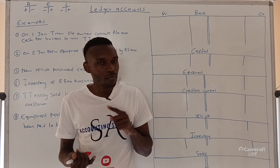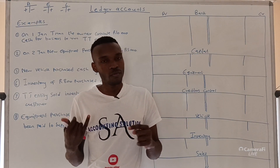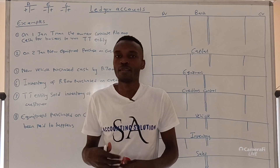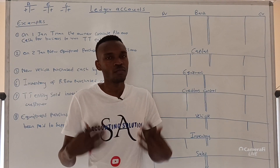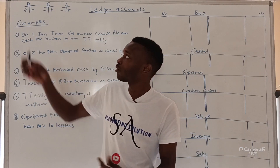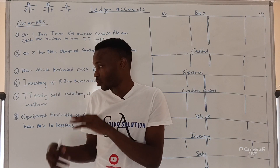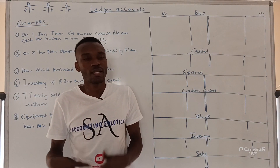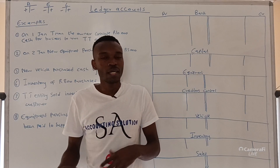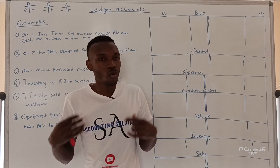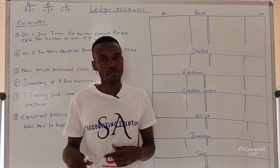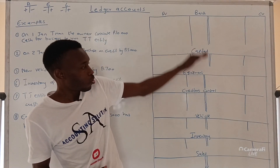Step one: you must be able to identify examples of assets — most of you already know these. Also be able to identify what falls under equity and liability. Assets are something owned by the business. Equity is the wealth of the owner, like capital and retained earnings. Liability is what the company owes to someone — if we purchase something on credit, it's a liability we have to pay.